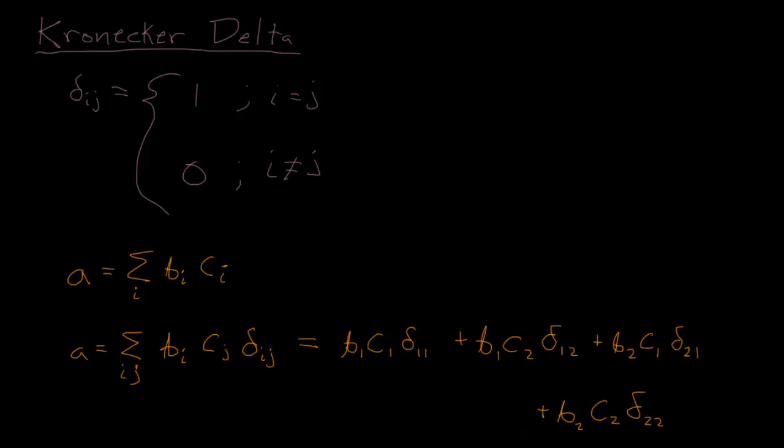So again, not super exciting, but we can see that here because the Kronecker delta is zero when the indices do not match, this whole term is zero. And the same for this term, they don't match, this whole term goes to zero. And then this one is one, and this one is also one because the indices match.